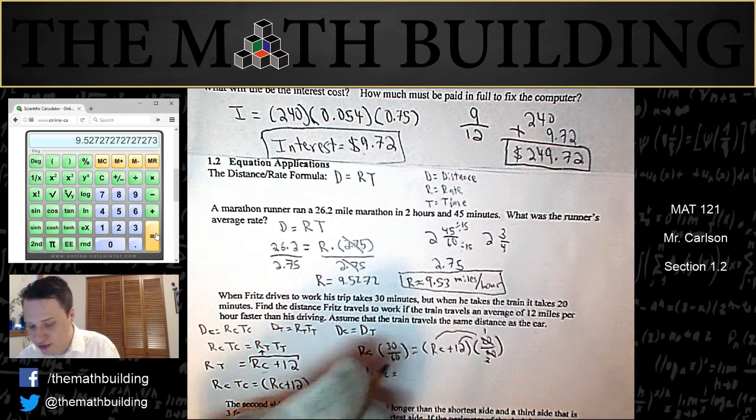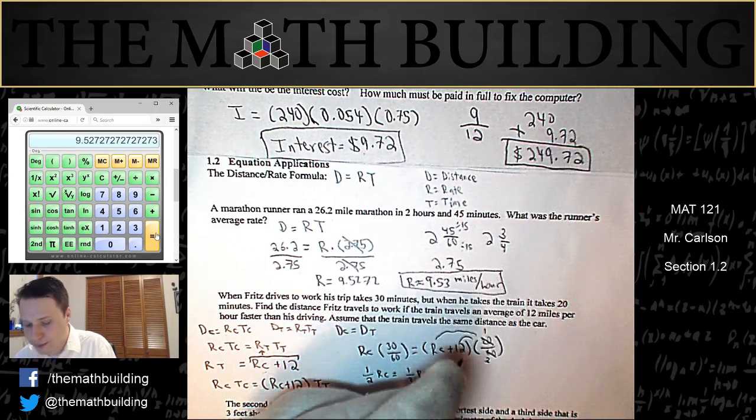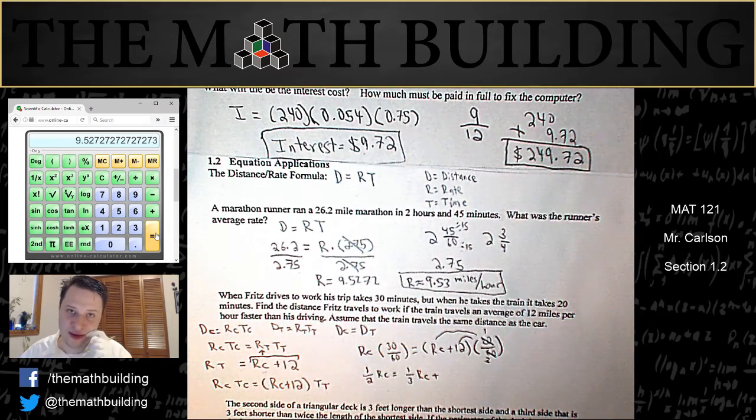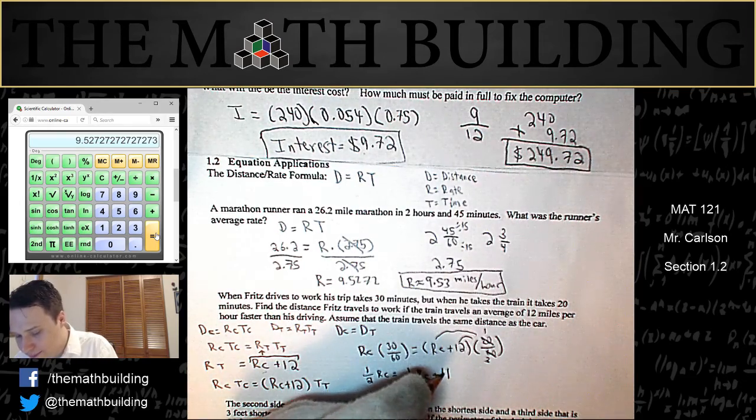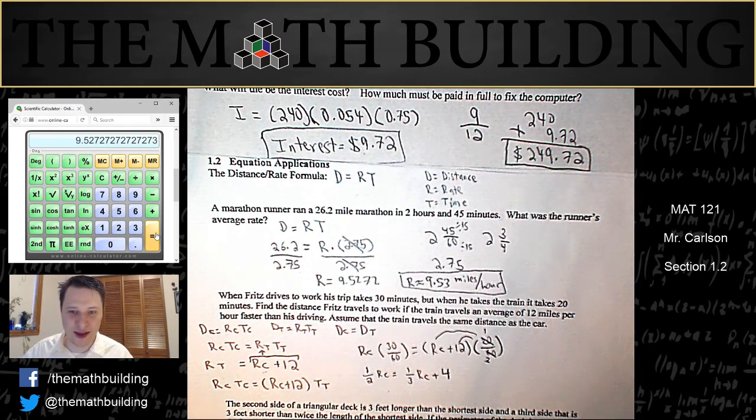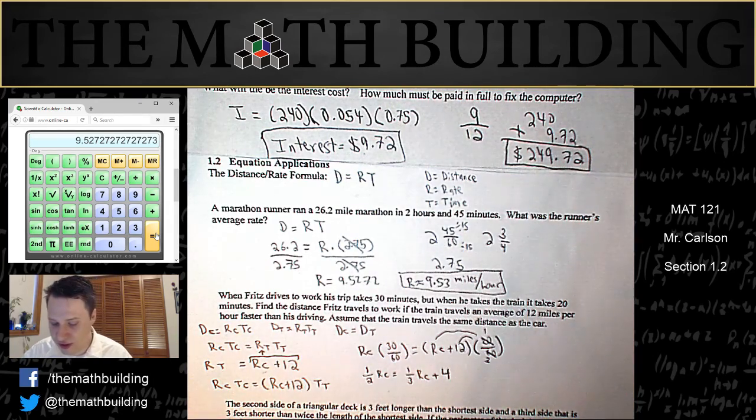So one-third times rc is one-third rc. One-third times 12 is the same thing as 12 divided by 3 which is 4. And you can see that we're getting there. We have one variable one equation now we can solve this. So let's do that.